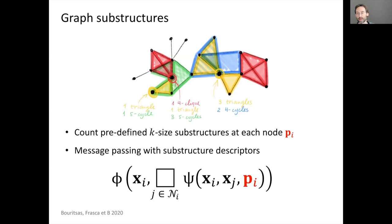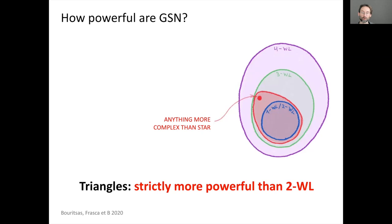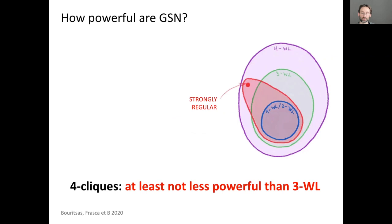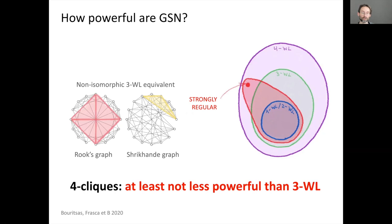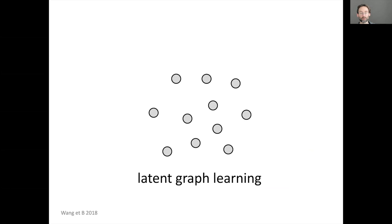Transformers applied to sequences use positional encoding to encode node order, which can be generalized to graphs as positional or structural encoding — for example, counting small subgraph structures as extra input features. We showed that this architecture is more powerful than the WL test. Since WL is actually a hierarchy of tests, with the right structural encodings we can surpass even higher-dimensional WL tests. A four-clique versus triangle example illustrates a case where 3-WL fails but structural encoding resolves it.